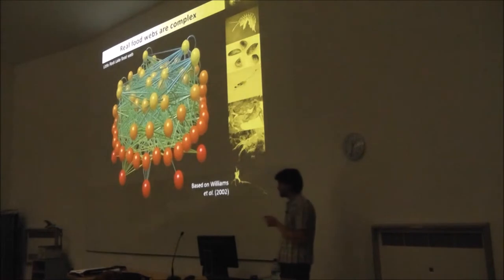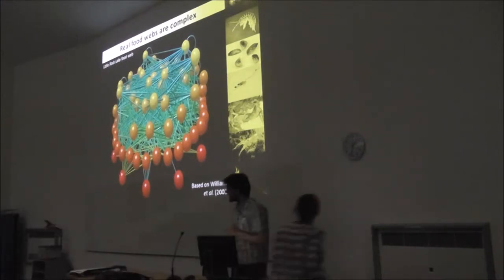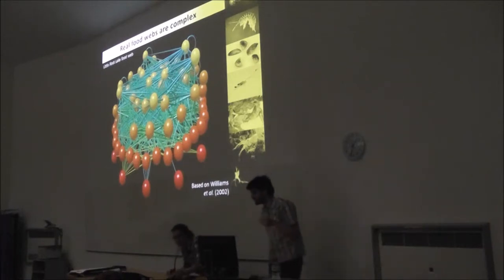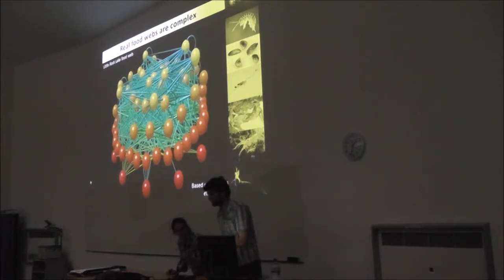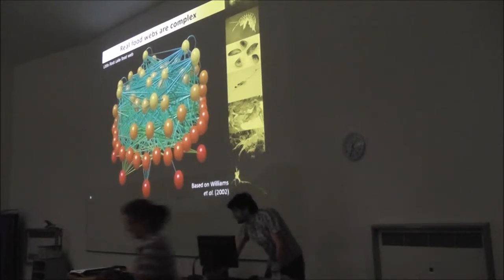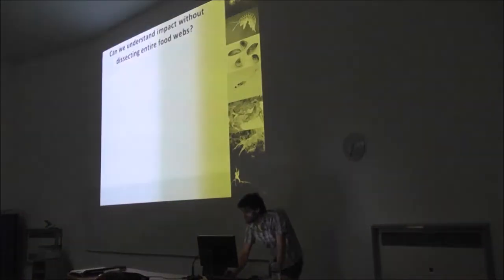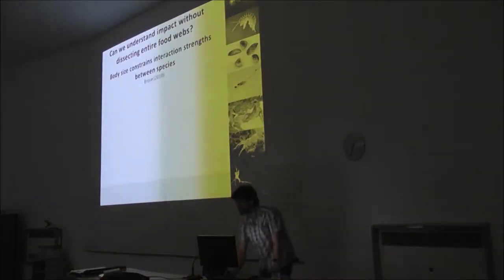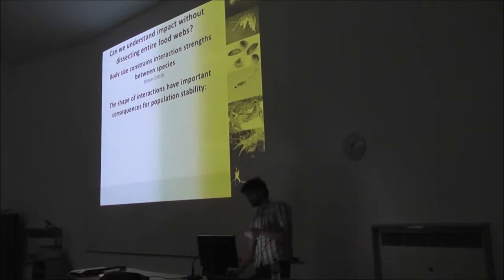Of course, real food webs are very complicated. Even quite simple or species-depauperate food webs have many pairwise interactions. So we can't hope to define all of these interactions, but there is some hope, because we can restrict our inquiry to certain size classes of species, because we know that body size constrains interaction strength. And secondly, we know that the shapes I mentioned of those interactions have important consequences for stability.